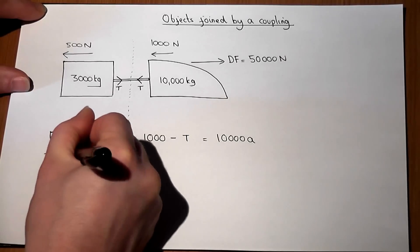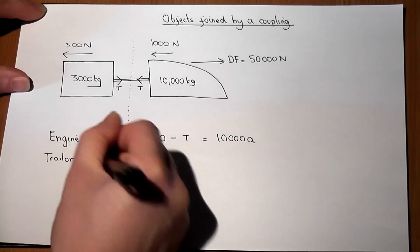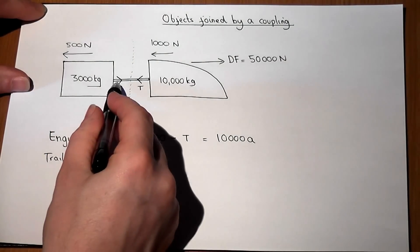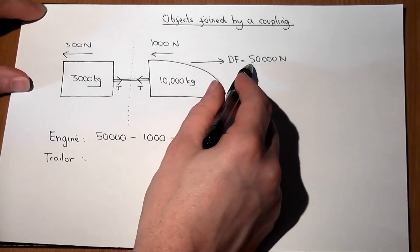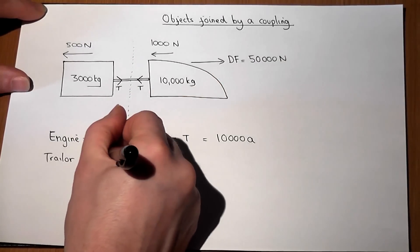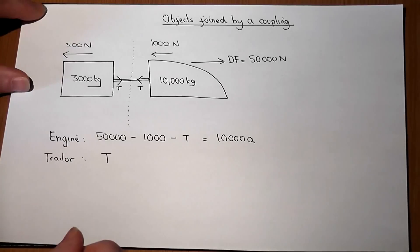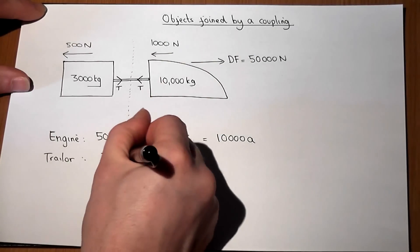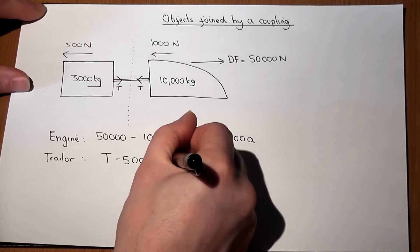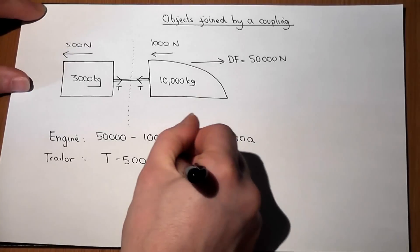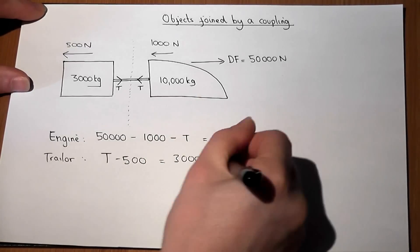There's also the trailer. Now this trailer feels the tension, not the driving force but the tension. The tension pulls it to the right and the resistance force of 500 tries to oppose motion, and this will equal its own mass times the acceleration.